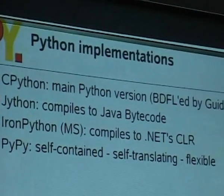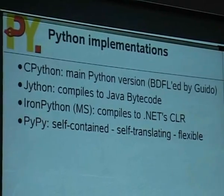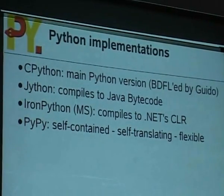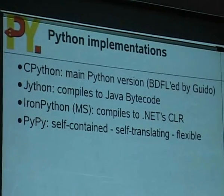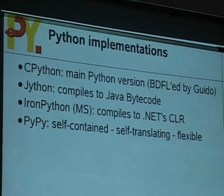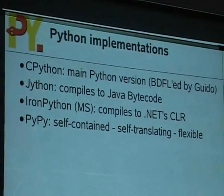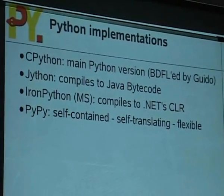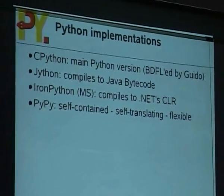There are various Python implementations already. The main one is what we call CPython, which is Python written in C. It was started by Python's inventor, now called the benevolent dictator for life because he drives the development of the language — Guido van Rossum, who currently works at Google after a long journey from Europe to the US.